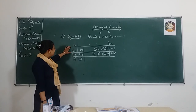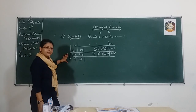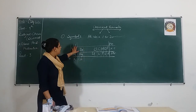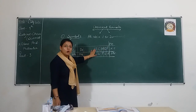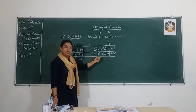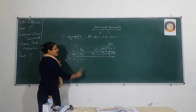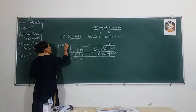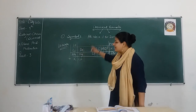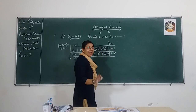Some students use another method — remembering group-wise: hydrogen, lithium, sodium, potassium. But I think it is easier to remember them in sequence: hydrogen, helium, lithium, beryllium, boron, carbon, nitrogen, oxygen, fluorine, neon, sodium, magnesium, aluminium, silicon, phosphorus, sulfur, chlorine, argon, potassium, and calcium. This is the first thing regarding symbols used for different elements.